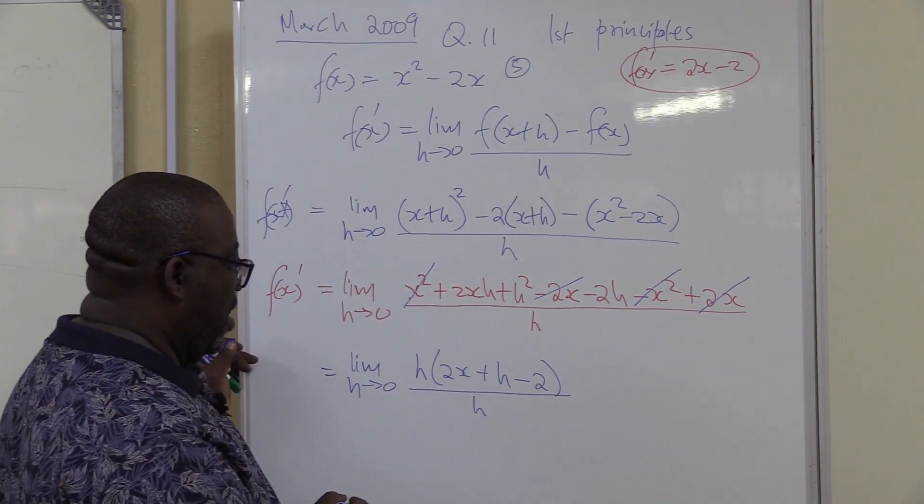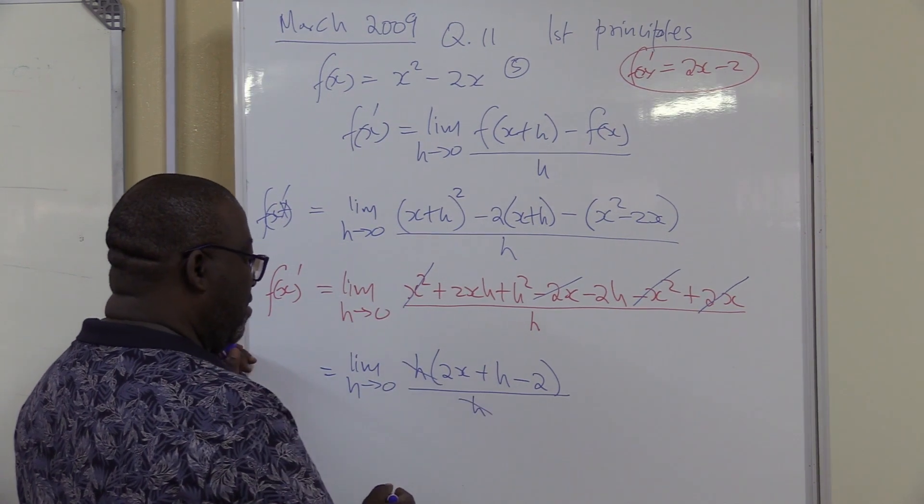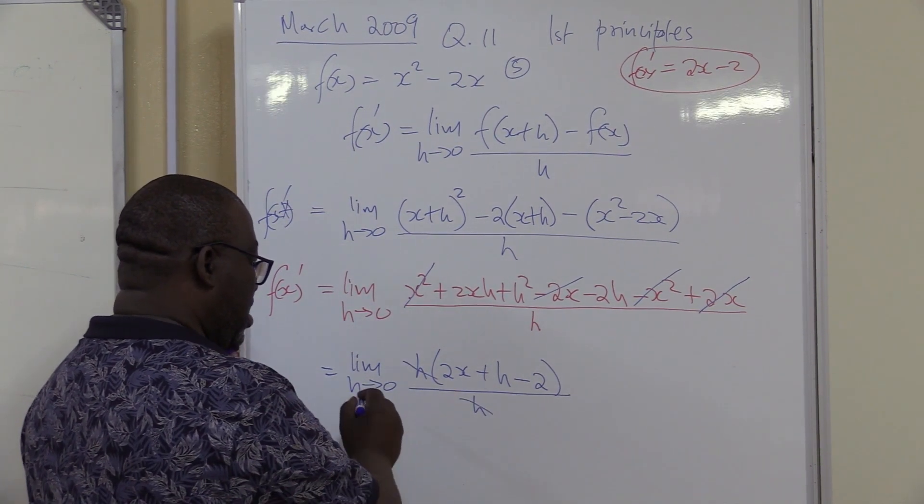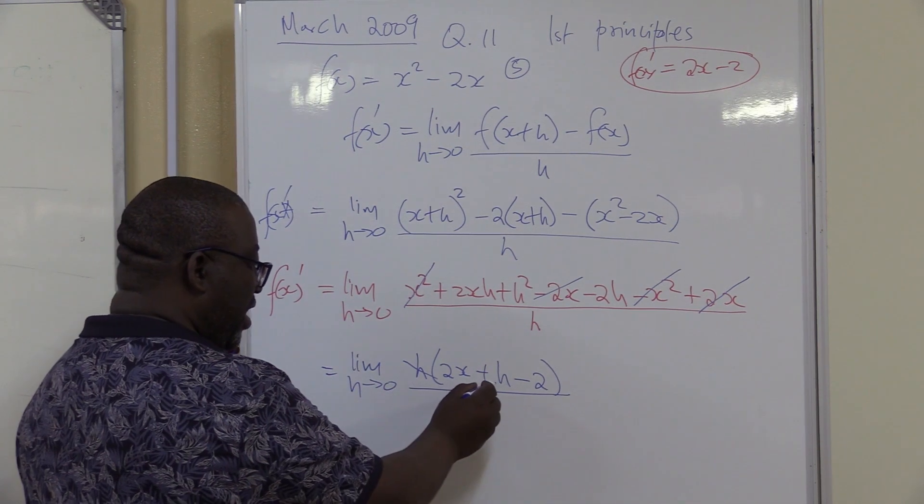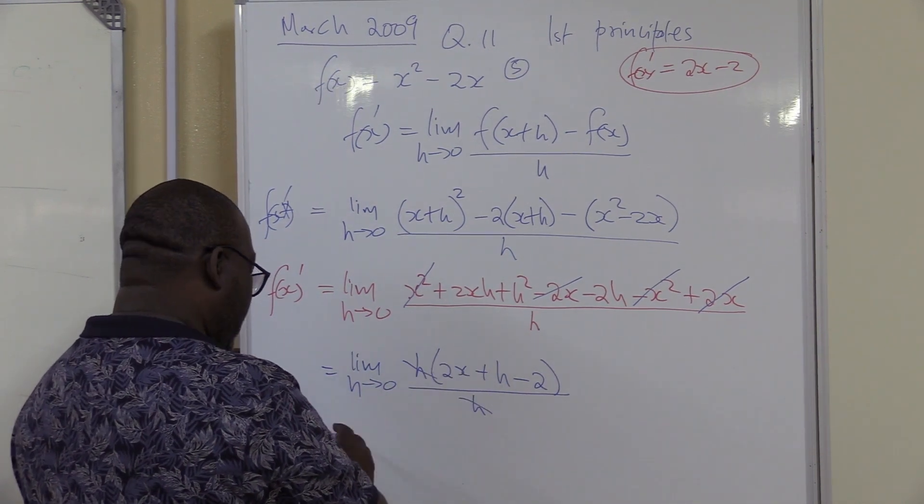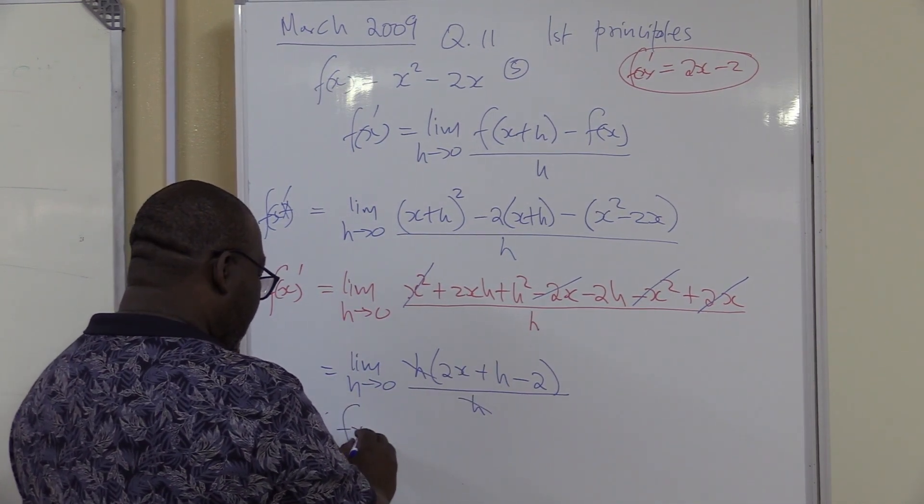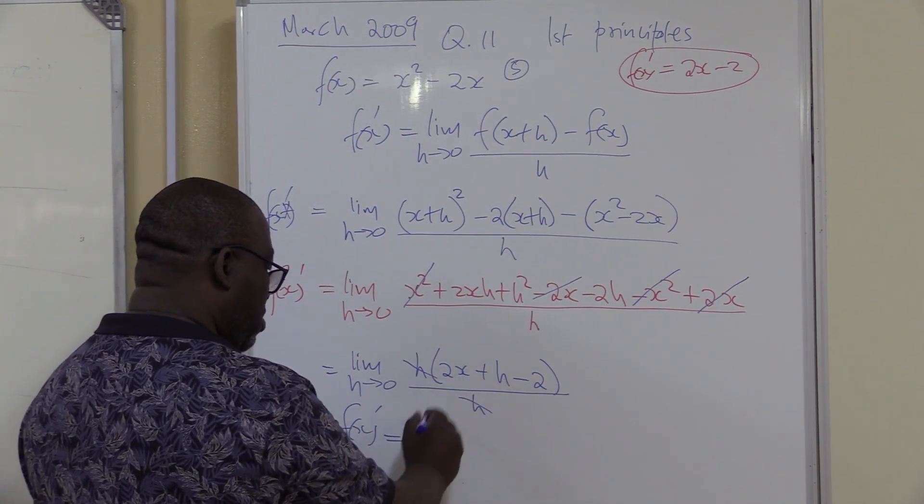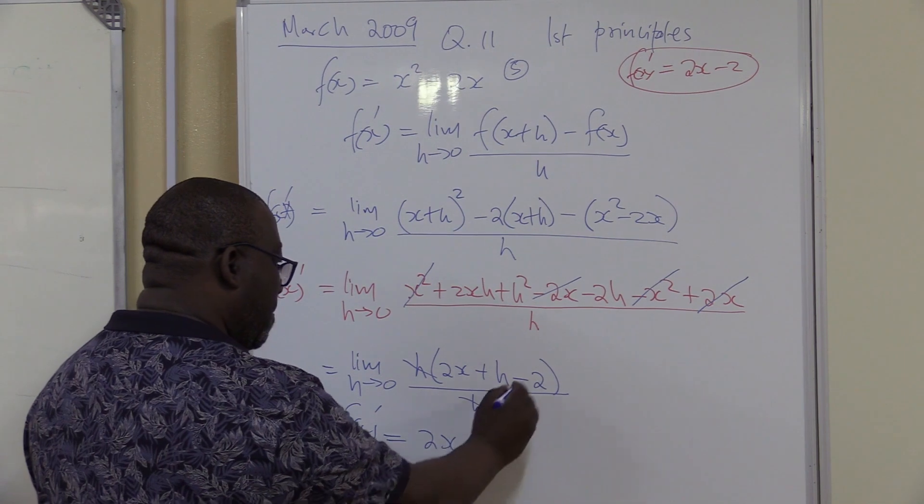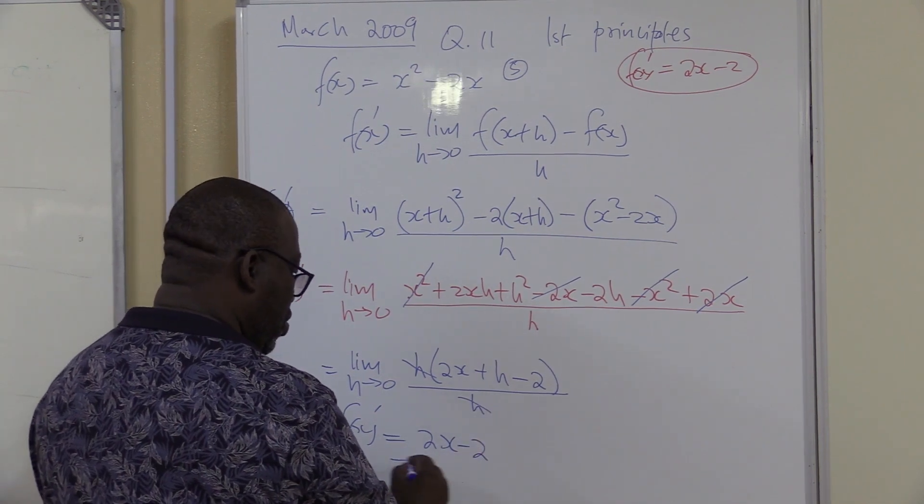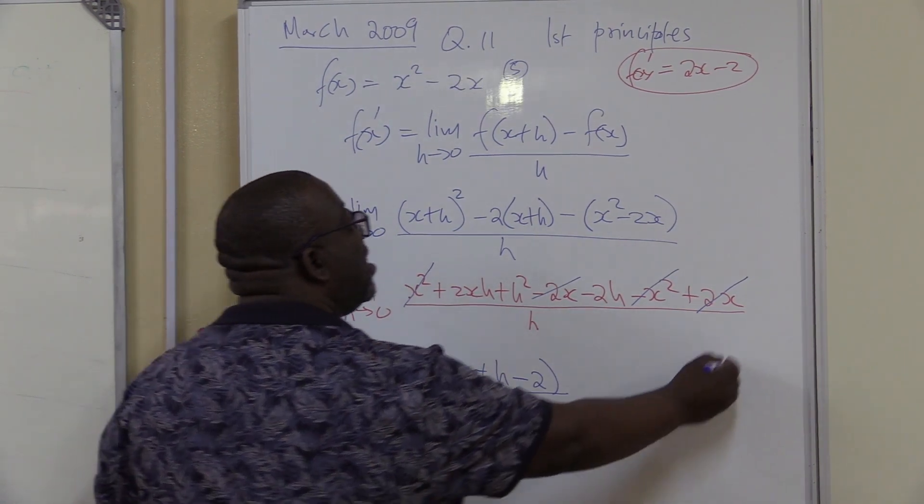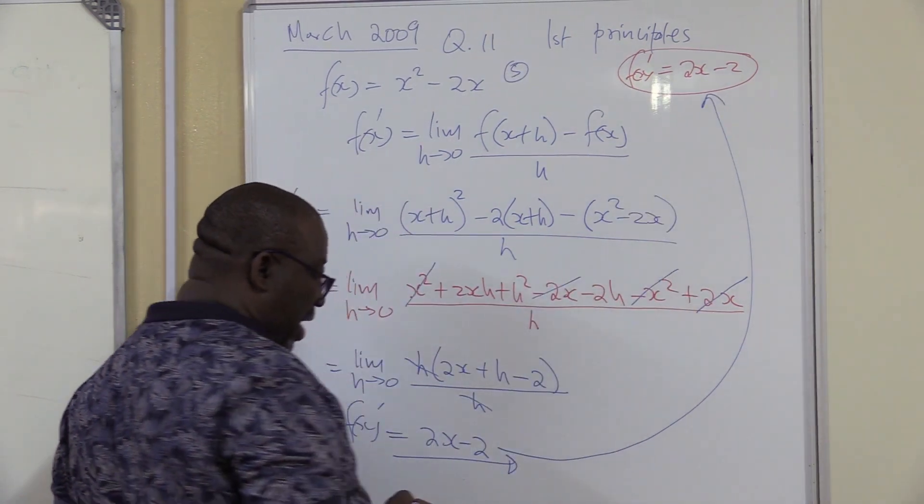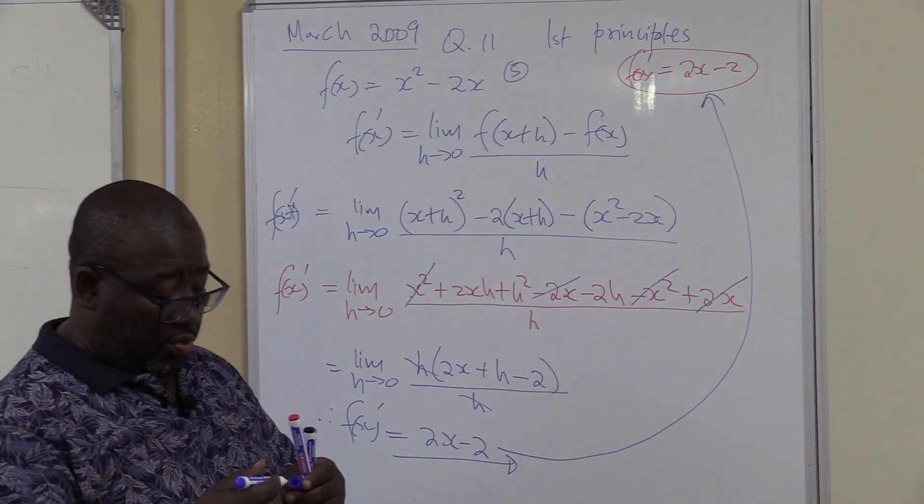Right, that's what we have. You can see that that divide there. Once h turns to 0, where there is h I will push 0 in there. Therefore f'(x) will equal, this will be 0, I'll be left with 2x minus 2. It is exactly what I said we will get at the end of the day.